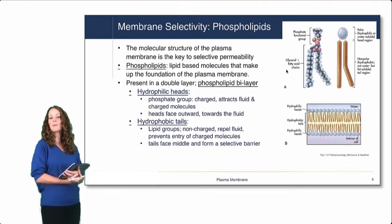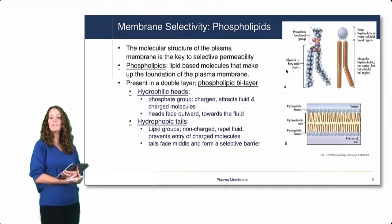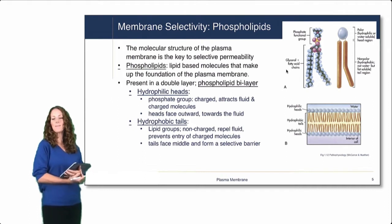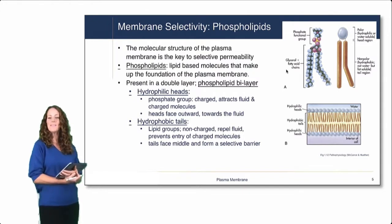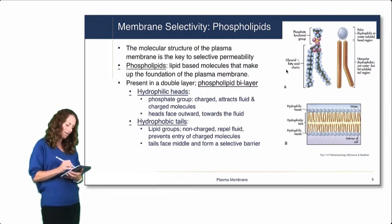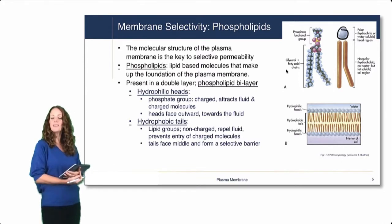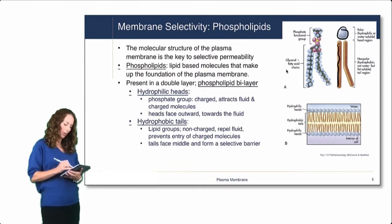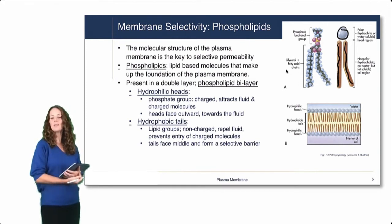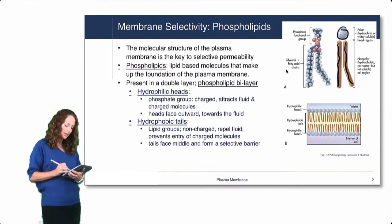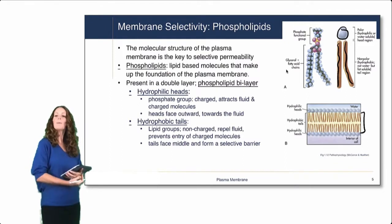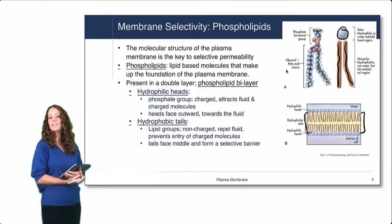Membrane selectivity is determined in large part by the phospholipids — the molecular structure of the plasma membrane is the key to this selective permeability. Phospholipids are lipid-based molecules that make up the foundation of the plasma membrane, present in a double layer called the phospholipid bilayer. They have polar or hydrophilic heads and nonpolar or hydrophobic tail regions. The hydrophobic tail regions make up a large portion of the membrane, and this is key to the selectivity.